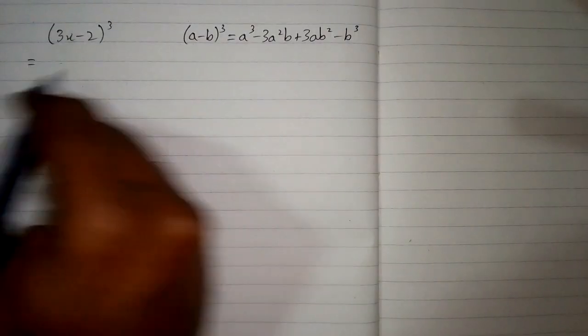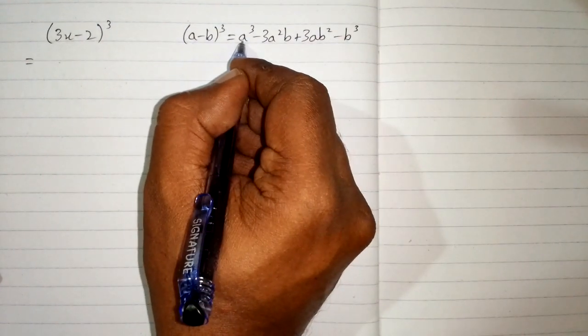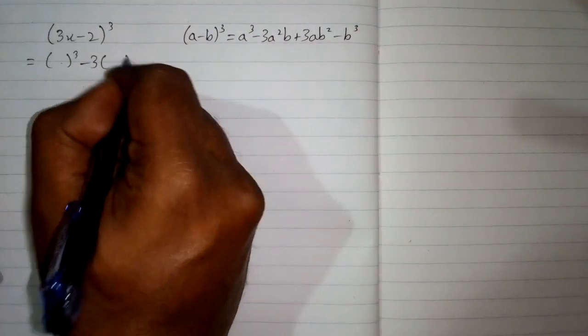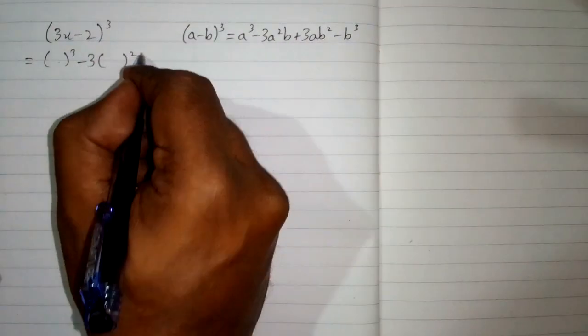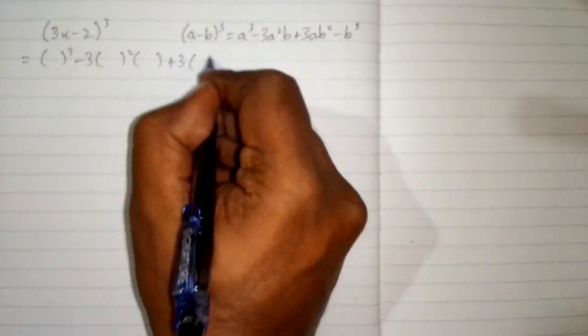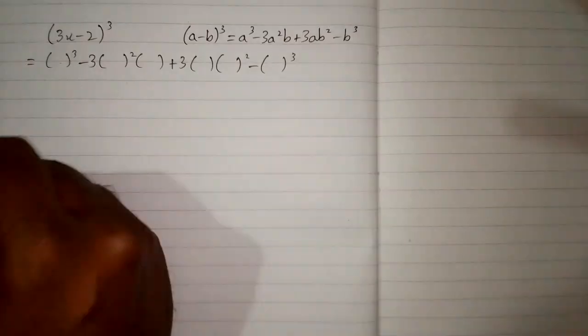So first of all we can write the structure of this formula. So we will put bracket in place of a. So we have a cube and minus 3a square. This is a square and then b and plus 3a and b square minus b cube.